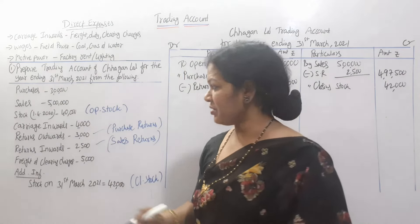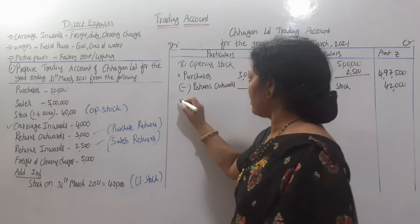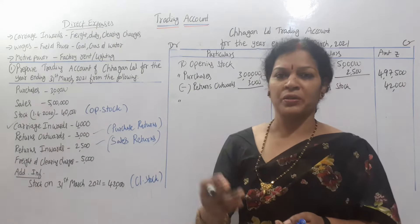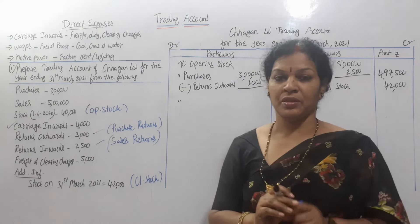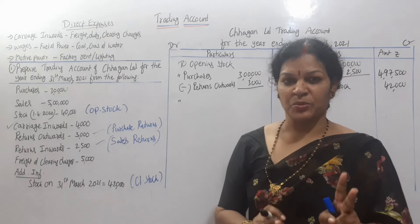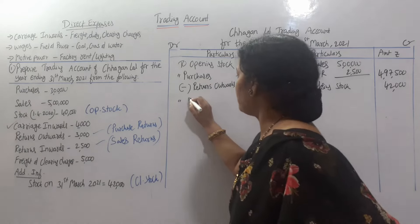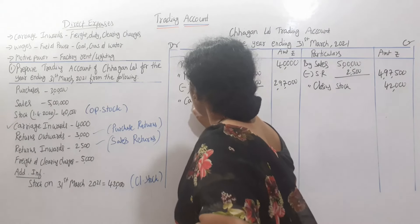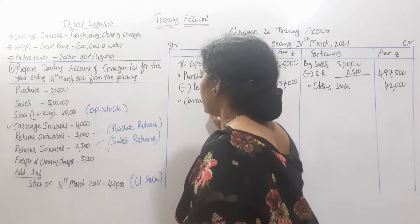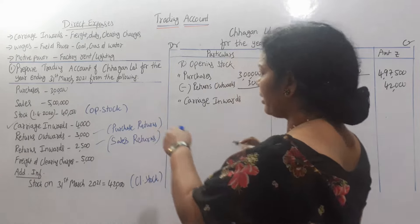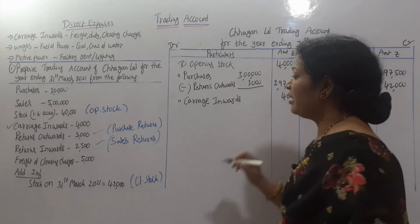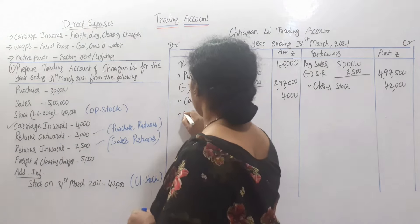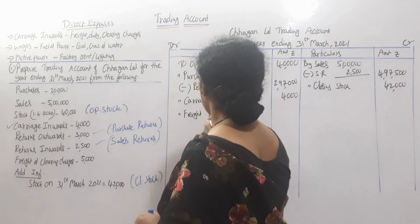Carriage inwards is a direct expense — write it here on the debit side. Carriage inwards: ₹4,000. Freight and clearing charges are also direct expenses — write them here. Freight and clearing charges: ₹5,000.